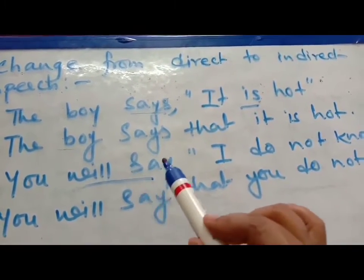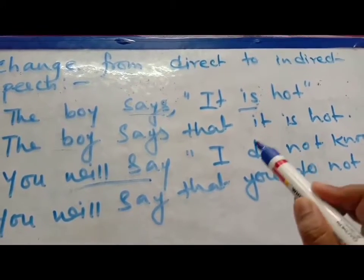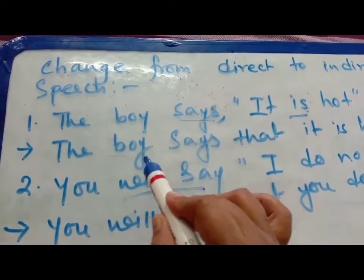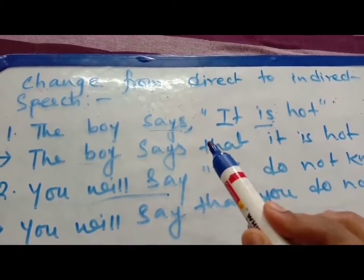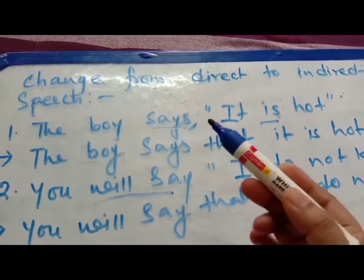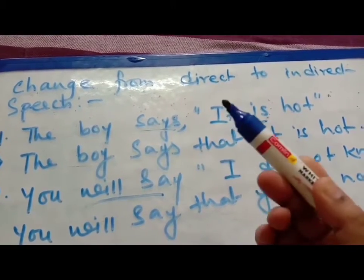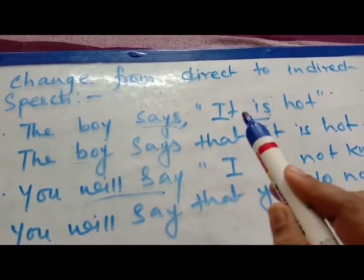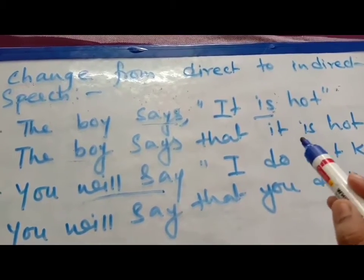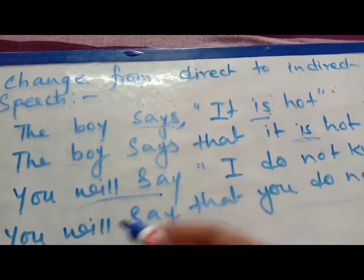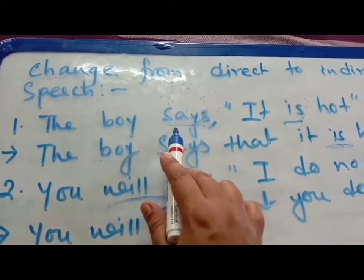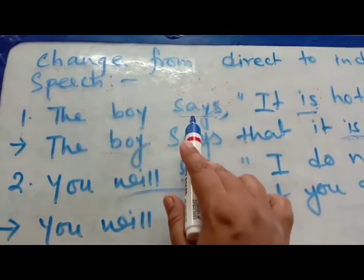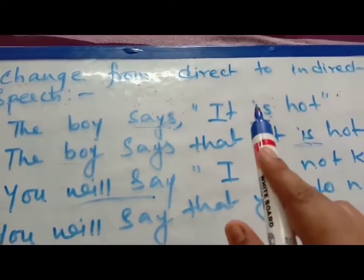That means you don't have to change the tense of the reported verb. The boy says — when you omit the inverted comma changing from direct to indirect, you put that. So, the boy says that it is hot. It will remain it is hot. There will be no change of the reported verb because the reporting verb is in simple present tense or simple future tense. If so, you will not change the reported verb.